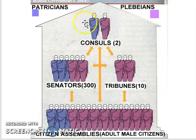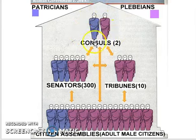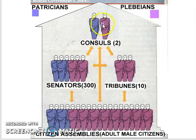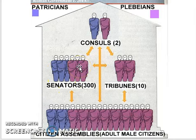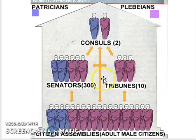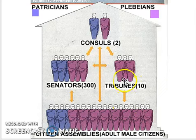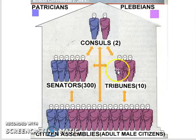At a later time, the two consuls could be either a patrician, a plebeian, or one of each. There are 300 senators, and the consuls are elected from the senators. Originally those 300 senators were only patricians; later they became a mix of patricians and plebeians. The tribunes represent only the plebeians — that lower class. They do not have a vote; they go to the senators and tell them what the plebeians want.